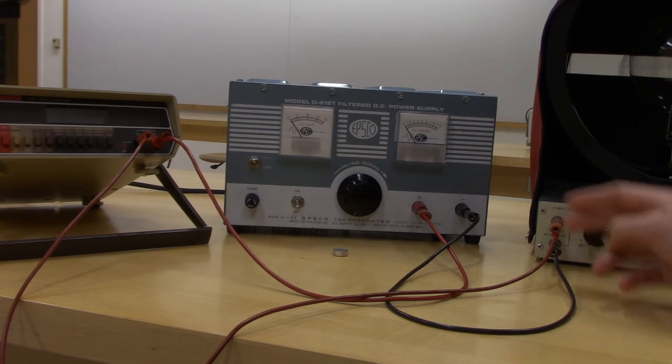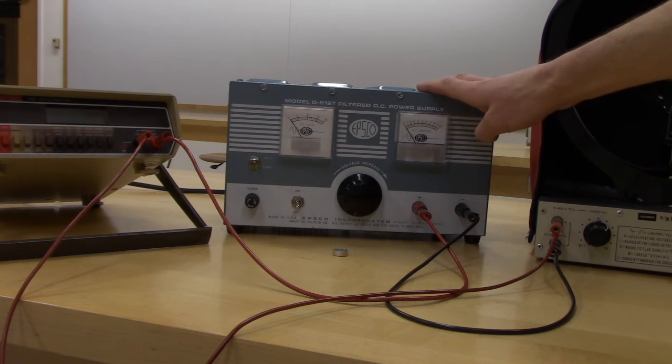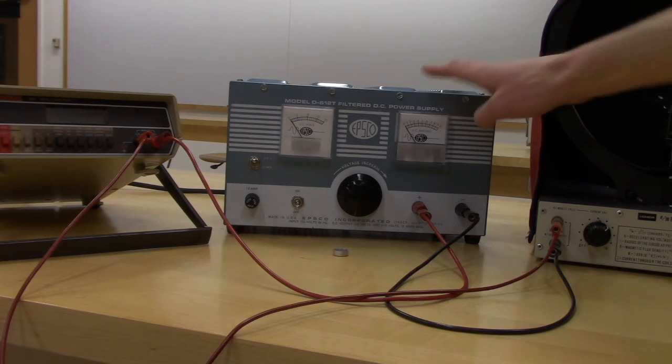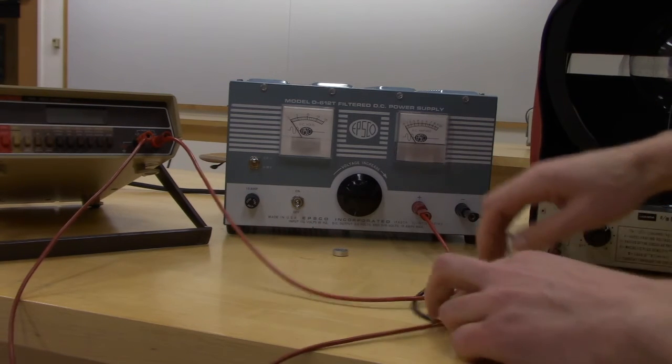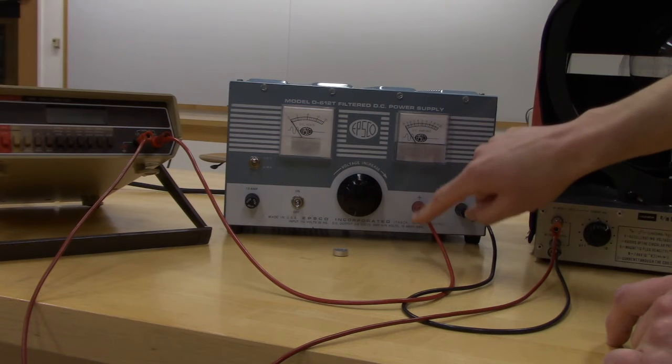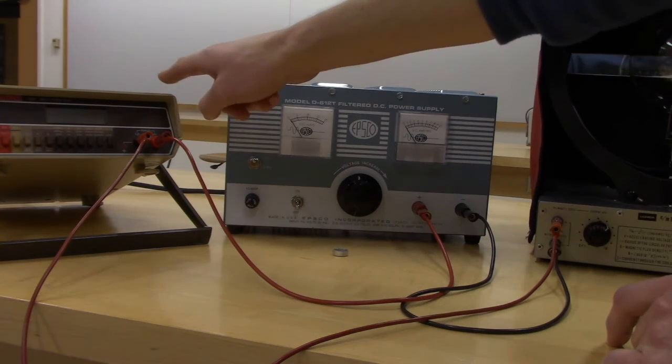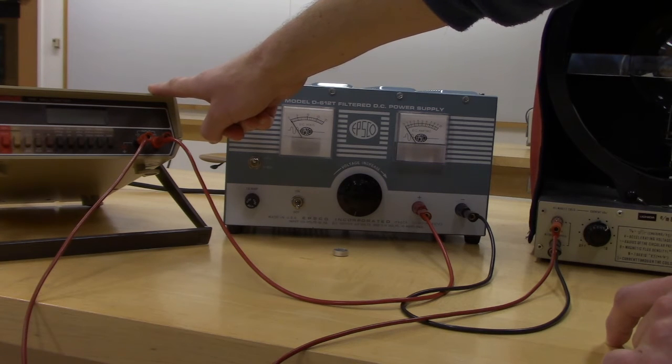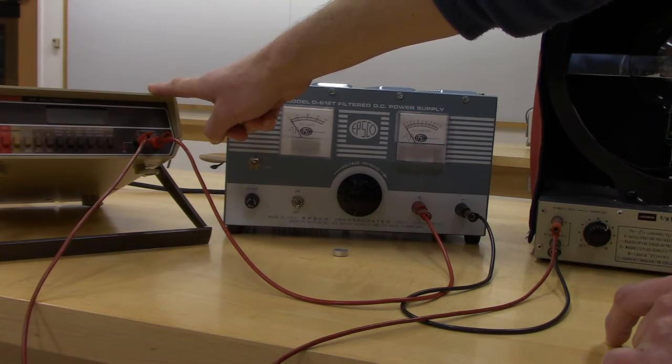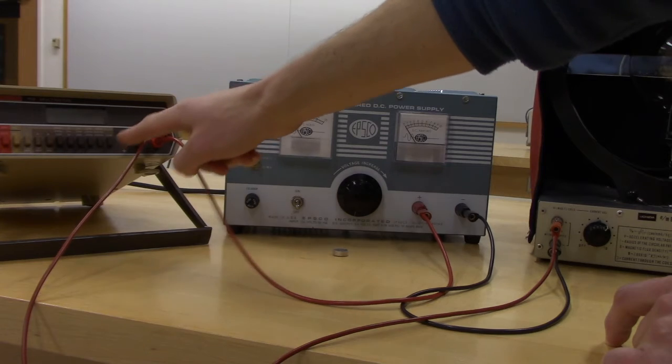The way this one is set up is our power supply now is going to be able to provide that current that is necessary. We will have the current out of the positive side going into the multimeter so we can measure the current, and this needs to be a series connection.